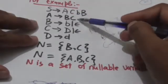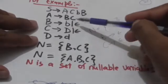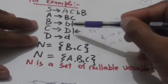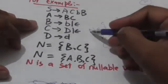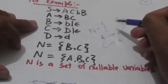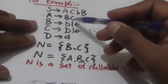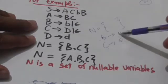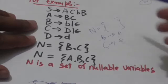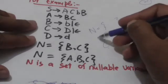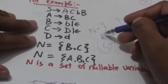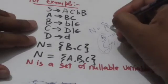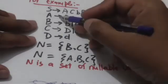The productions of grammar G are: S derives ACB, A derives BC, B derives B, B derives empty string, C derives D, C derives empty string, and D derives T. First of all we will make a set N. We can see productions B derives empty string and C derives empty string, so we add variables B and C to set N.